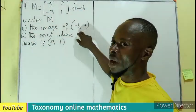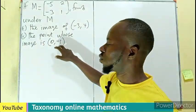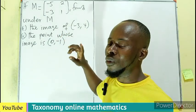the image of (-3, 4), then the point whose image is 0, -1.